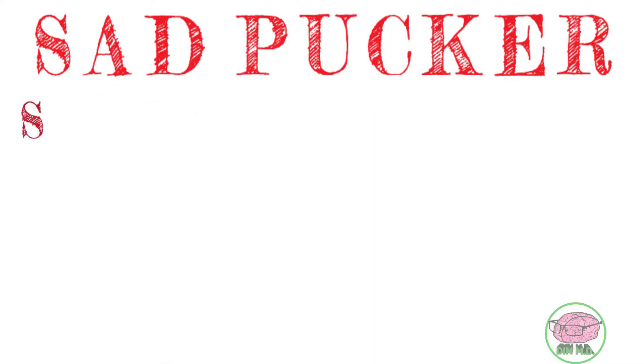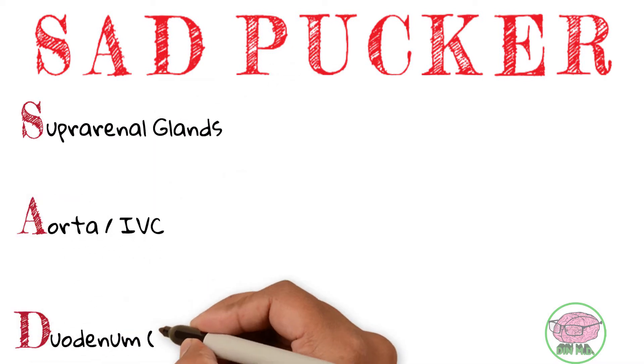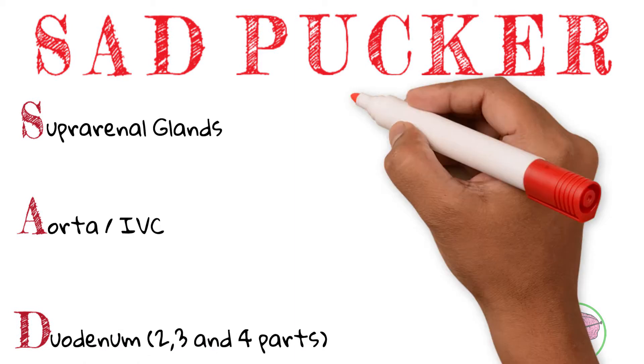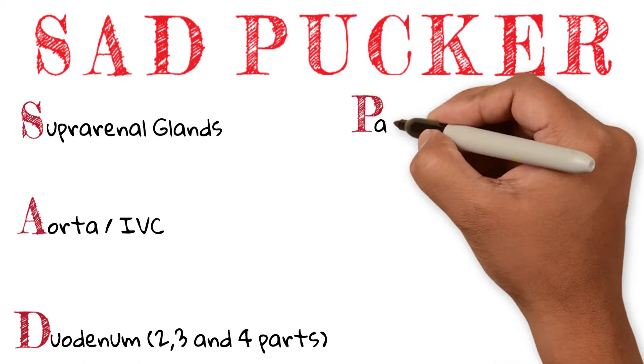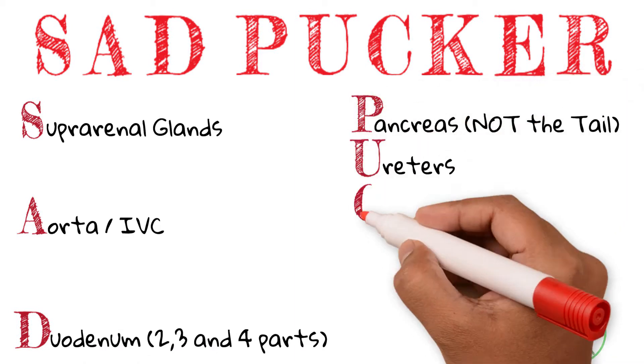S stands for suprarenal glands. A stands for aorta and inferior vena cava. D for duodenum — the second, third, and fourth parts. P for pancreas, not the tail. U for ureters.